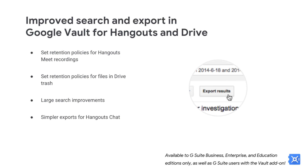Lastly, we're also making it easier for organizations to export large amounts of Hangouts Chat data. Going forward, export data from Hangouts Chat will be condensed into a small number of files. Previously, you'd see one conversation per file. Now you'll see multiple conversations included in the same file, until the file size limit is reached. To learn more, see the Help Center.